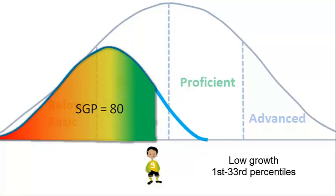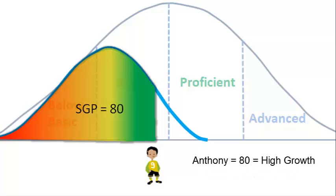OSPI has classified low growth as between the 1st and 33rd percentiles, typical growth as between the 34th and 66th percentiles, and high growth as between the 67th and 99th percentiles. In Anthony's case, his SGP of 80 would be considered high growth.